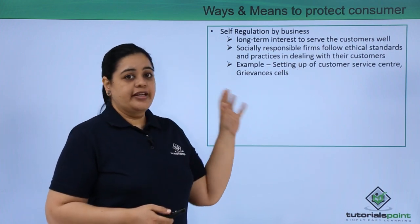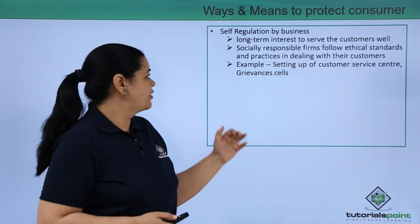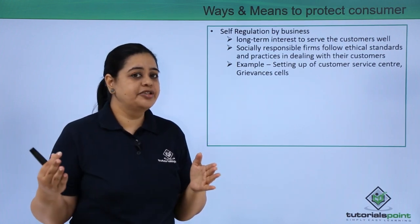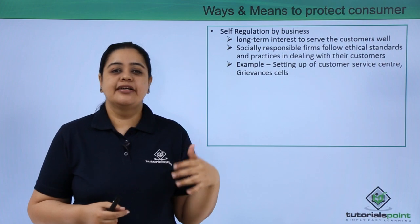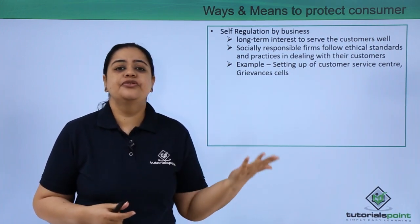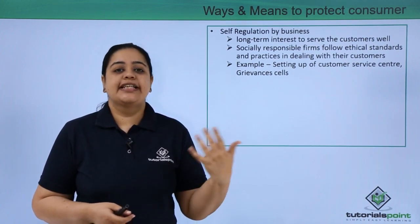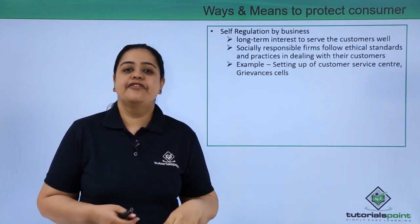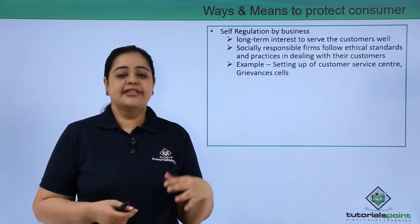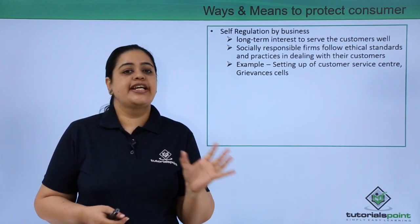If you are a socially responsible firm, you should follow ethical standards and practices when dealing with your customers. For example, setting up customer care numbers and grievance cells. Many companies never pick up when you call, or take forever to respond to emails. Whereas certain companies promptly offer a callback if busy, or send an acknowledgement that the email was received and will be responded to within a specific number of days or hours.